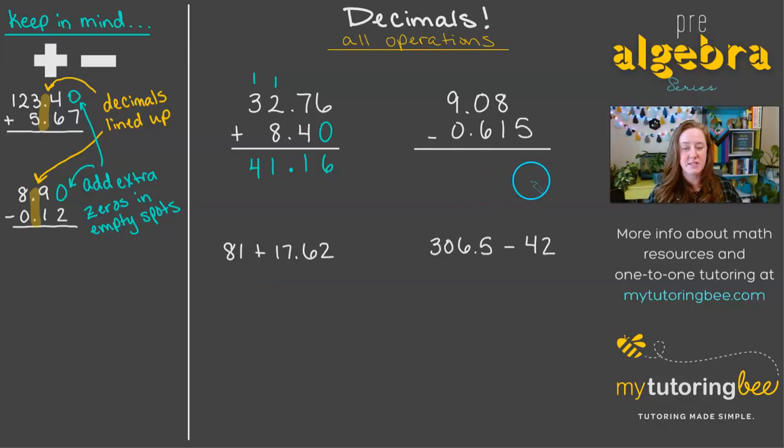Let's move over to the subtraction problem. Again, I've got an empty spot right here. So I'm just going to fill that in with zero. And now we can subtract. So 0 minus 5, we can't do that. So we have to regroup. This becomes a 10. So you can see that this is just like any normal subtraction problem where I'm just regrouping when I need to.